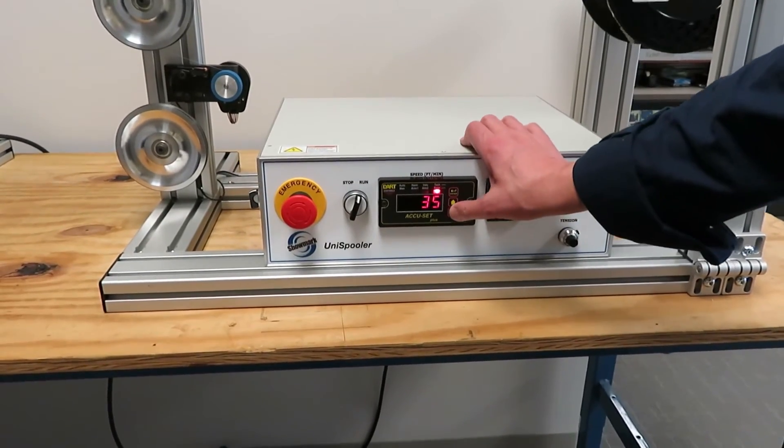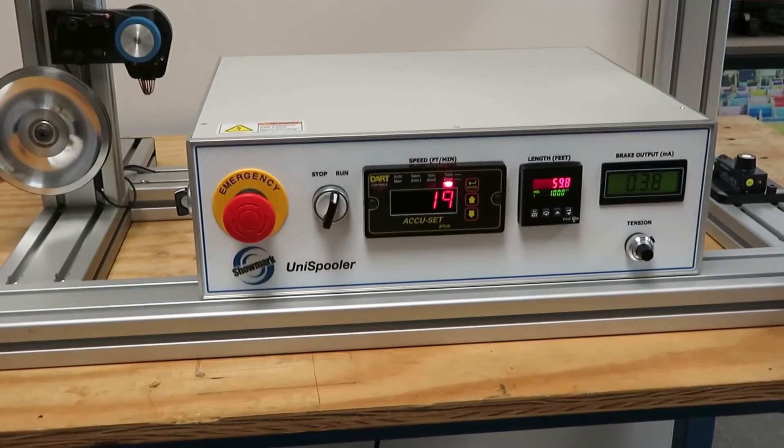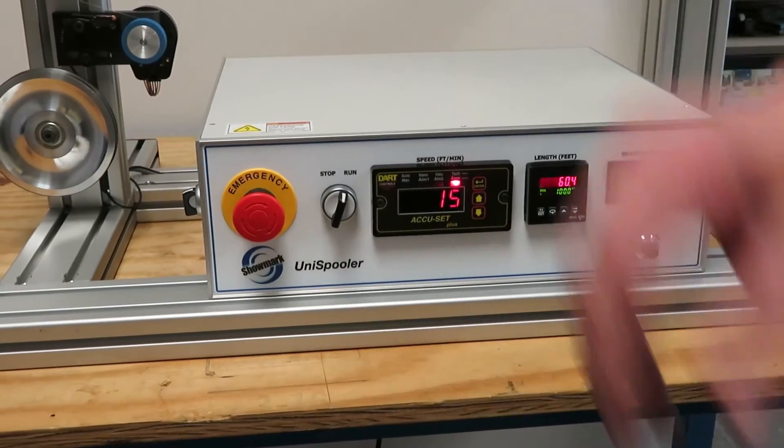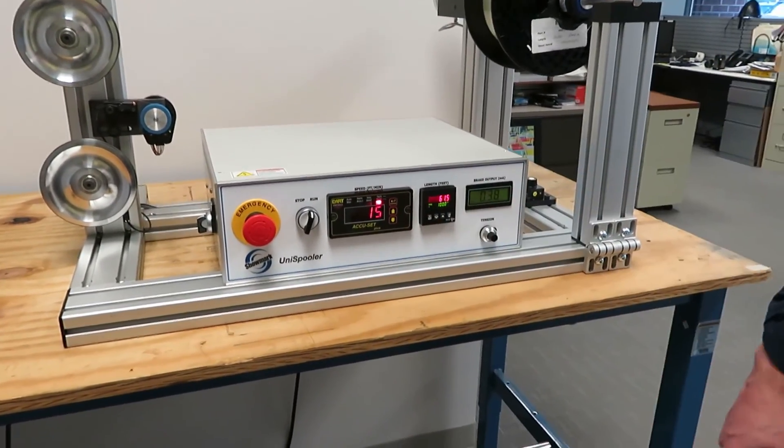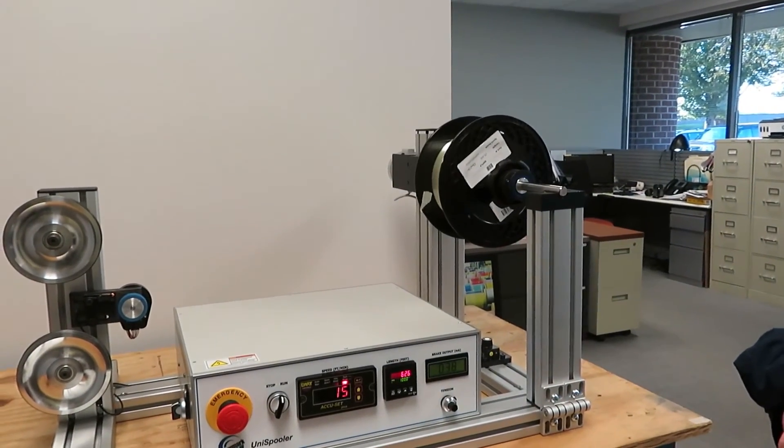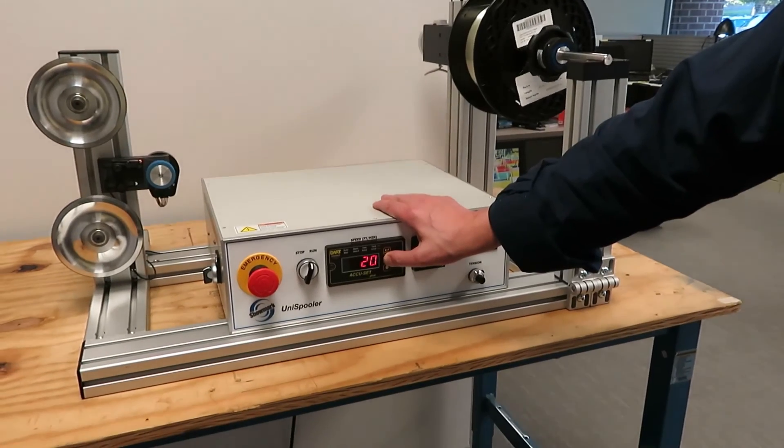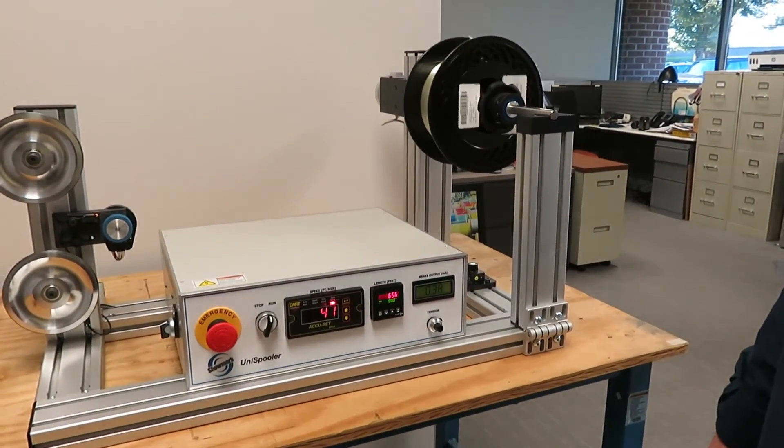I can go down to a much slower crawl. And this machine, this customer, wanted a very slow machine. So right now it's controlling at 15 feet per minute. You can see it's a very smooth, gradual wind. I can increase, let's go up to 40 feet per minute, and you can see it speed up.